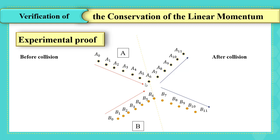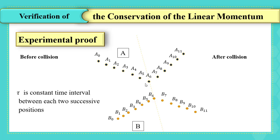We are going to make the study of the system A and B before and after collision. The motion of each puck is uniform before and after collision since we can see that equal distances are covered during equal intervals of time tau, where tau is constant time interval between each two successive positions.